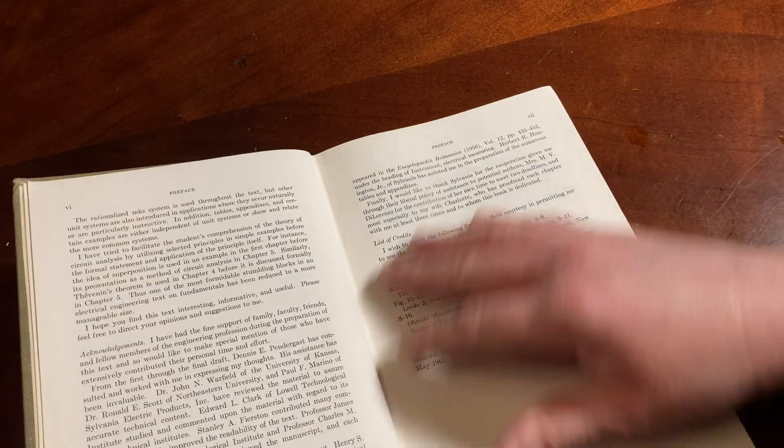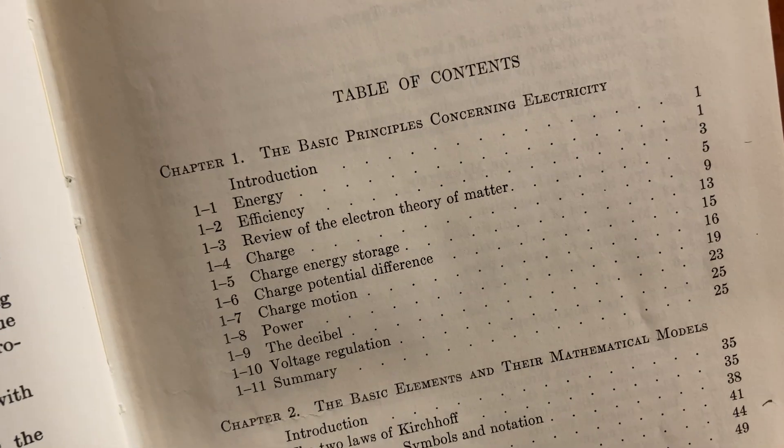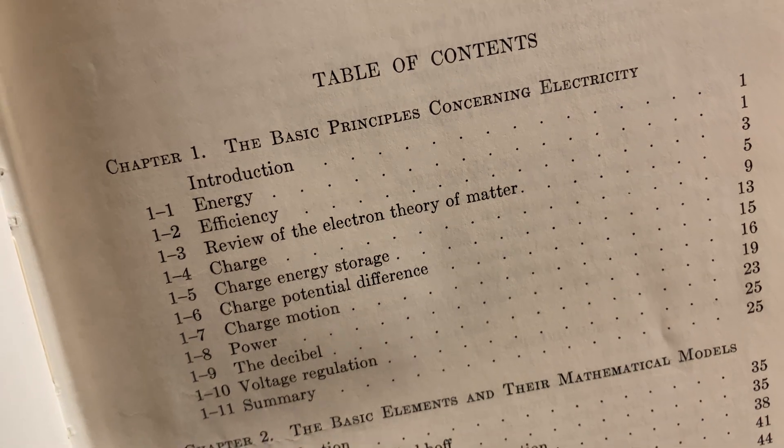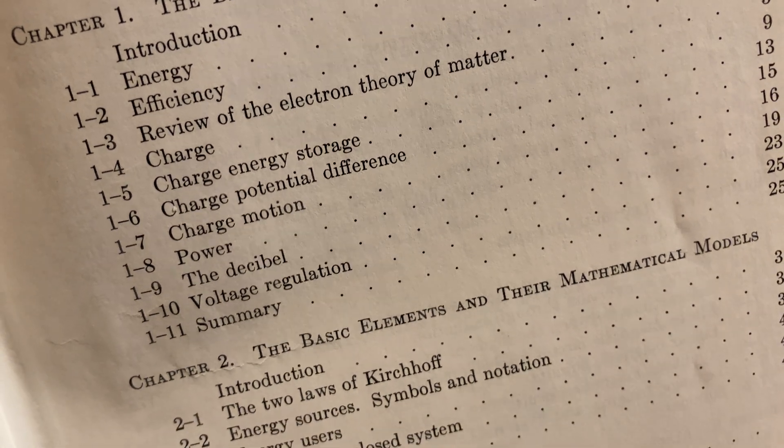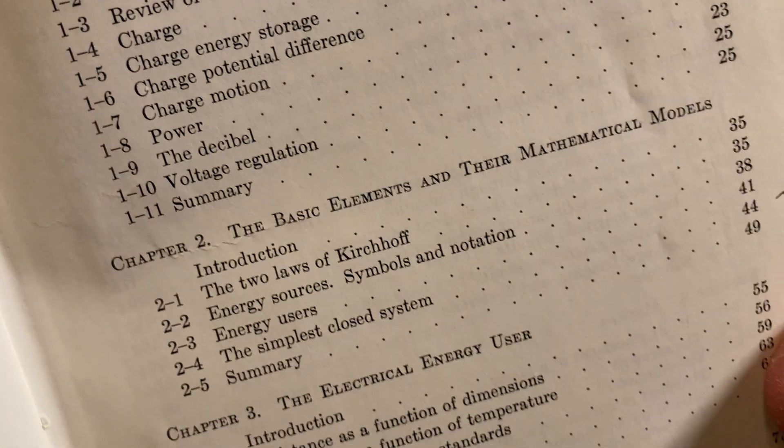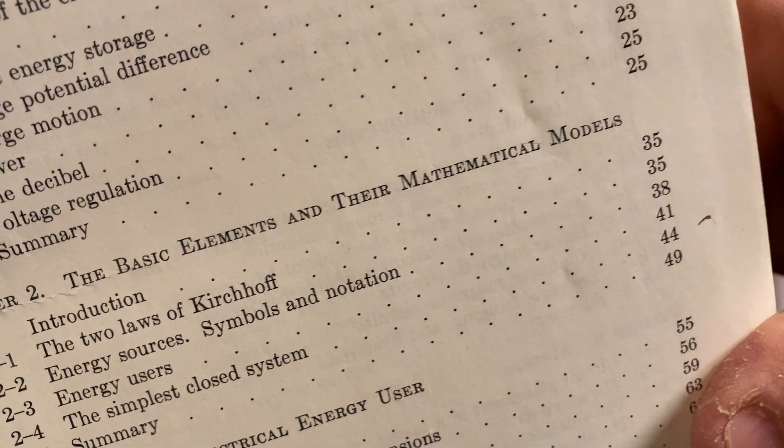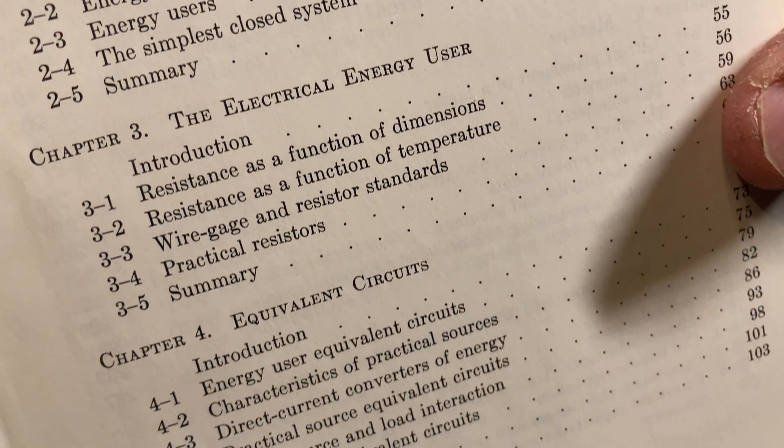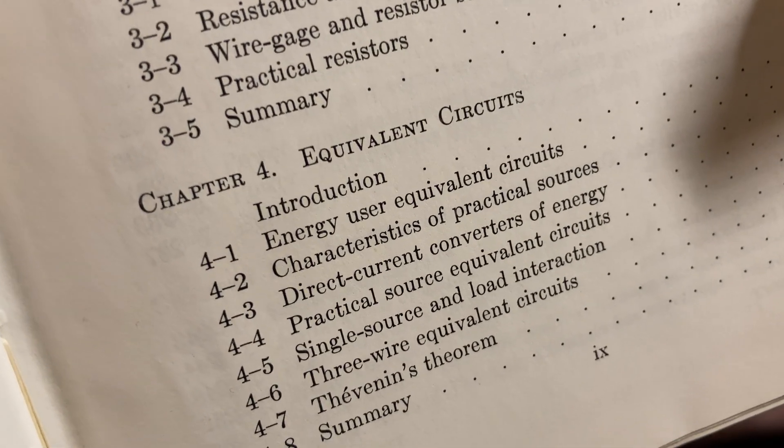Cool, let's take a look at the content, see what it covers. This has a lot of information. The basic principles concerning electricity, energy efficiency, review of the electron theory of matter, charge, the basic elements and their mathematical models, the electrical energy user, equivalent circuits. Let's turn the page. It's a nice book.